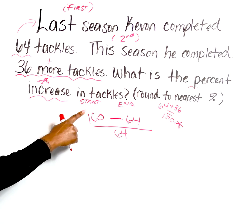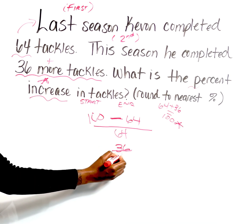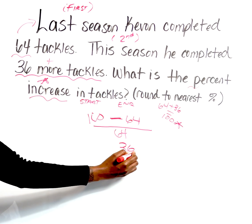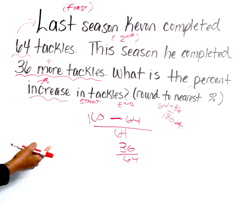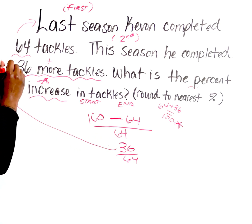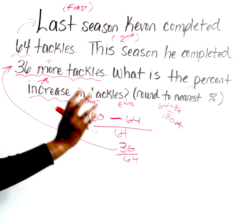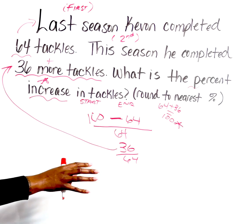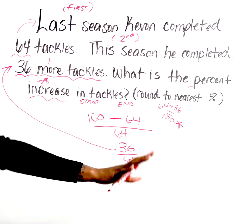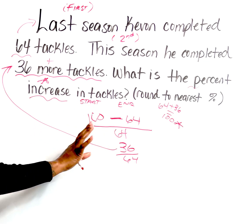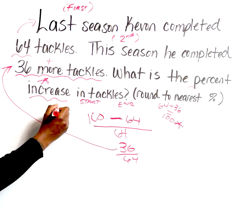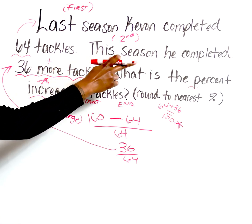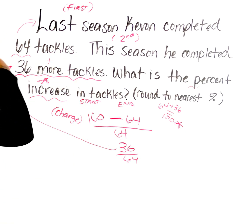From here we're going to simplify. We say 100 minus 64, which gives us 36 over 64. Notice this 36 looks very familiar — it represents the change. So if you're super comfortable, you can start recognizing the change and bypass the subtraction. If not, just find your two values, subtract, and divide. When we subtract here, that subtraction represents the change. This year he completed 36 more compared to last year — that was the change.